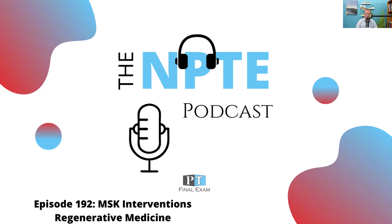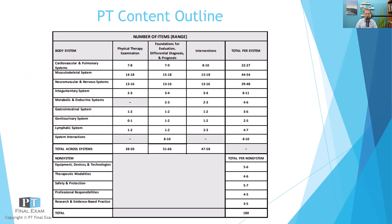Today I've got a practice question for you related to the musculoskeletal system. In this podcast, we go through the FSBPT's published content outline. The musculoskeletal system is the largest single system on the exam with somewhere between 44 and 54 questions related to it, covering examination, differential diagnosis, and interventions. Remember on test day all the questions are randomized, so you won't see all the musculoskeletal questions together — it will be randomized throughout.